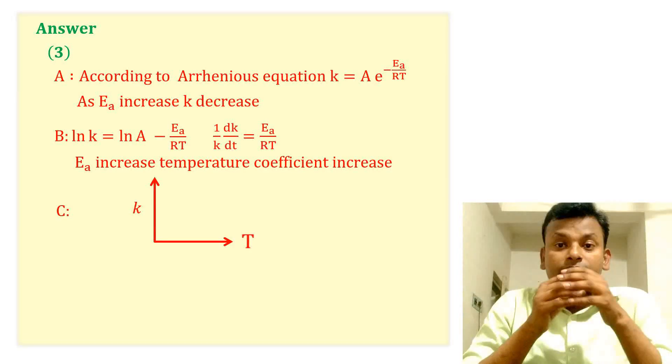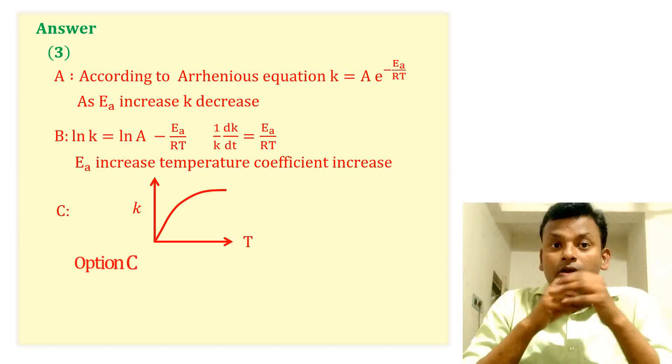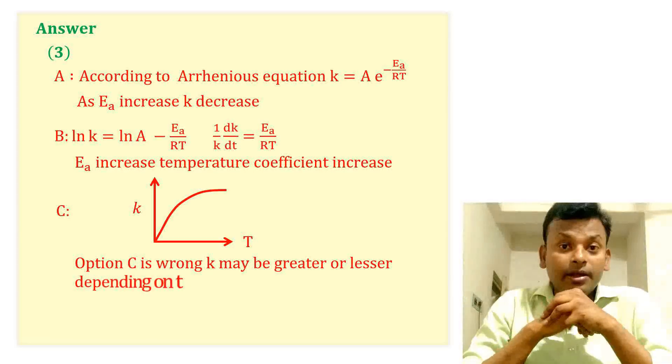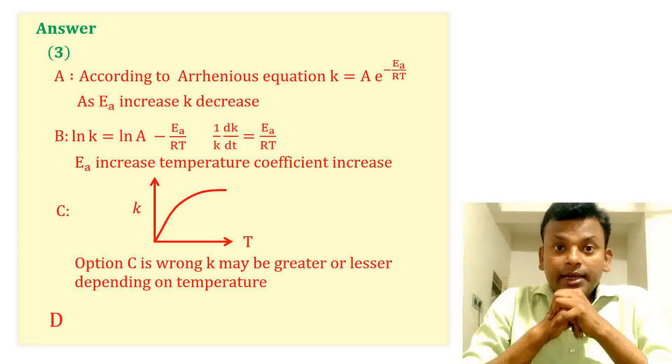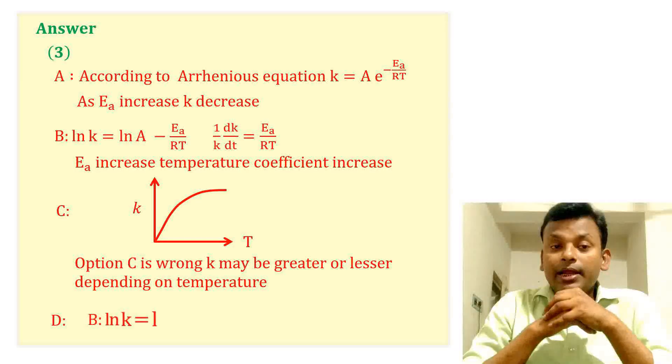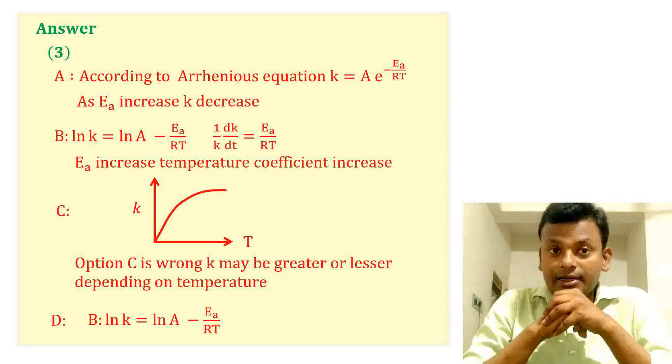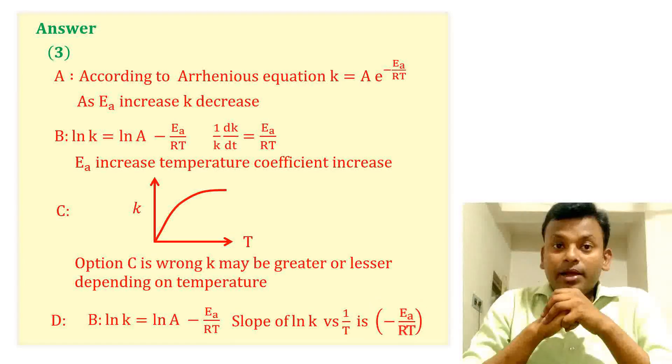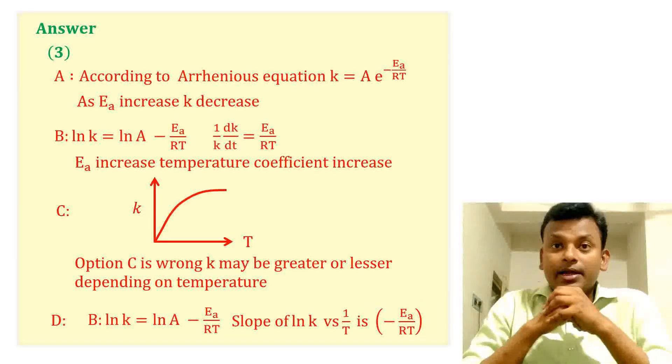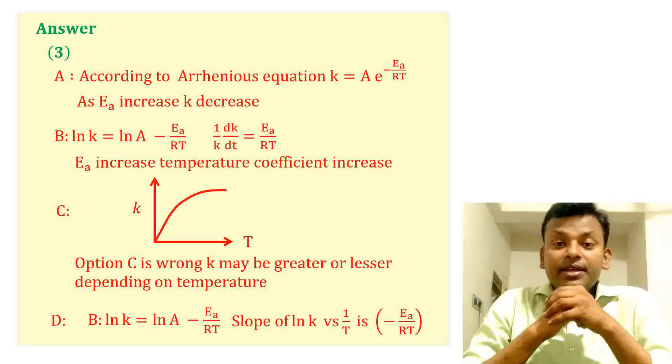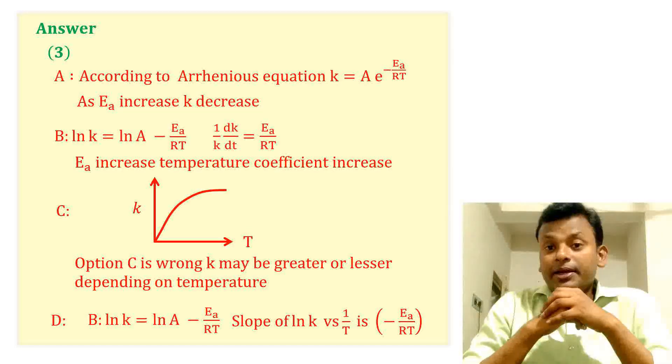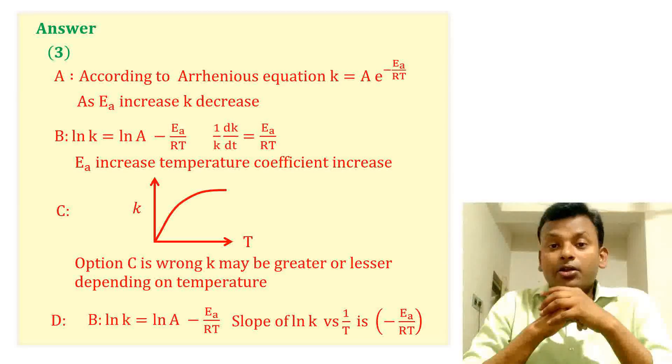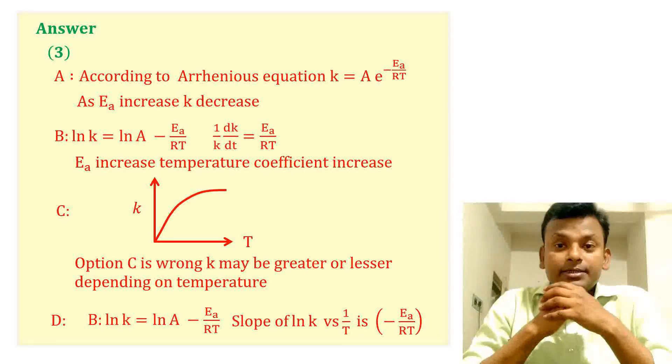C. This is the graph. Option C is wrong. K may be greater or lesser depending on temperature. D. ln K equals to ln A minus Ea by R times 1 by T. Slope of ln K versus 1 by T is minus Ea by R. So A, B, and D statements are correct and C statement is wrong. So answer is 3.